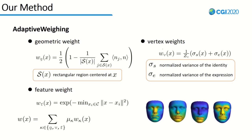Instead of using uniform weighting, we present an adaptive weighting scheme according to the geometric variations of identities and expressions. We utilize the statistical shape variations of identities and expressions to define the vertex weights. The shape variations of 150 neutral scans and 46 expressions of the FaceWarehouse dataset are estimated. In order to enforce the fitting of facial features, we assign weight WF to vertices according to their distance from the region of interest on the neutral 3D mesh, including the eyebrows, the eyes, the nose, and the upper and lower lips. In summary, the adaptive vertex weight WF is defined as a normalized combination of the shape and feature-related weights.